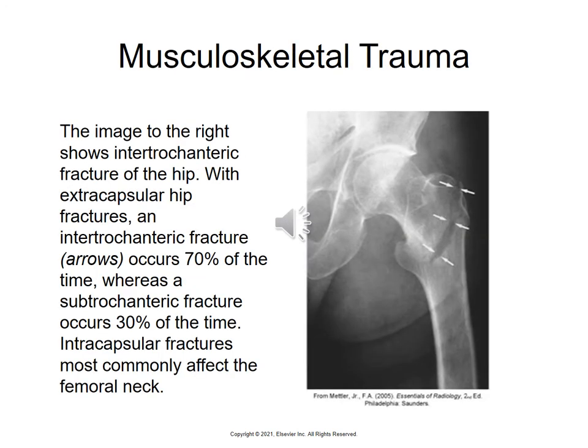This is a good X-ray of a hip fracture. The arrows are pointing to the intertrochanteric fracture. This type of fracture occurs 70% of the time when somebody has a hip fracture.